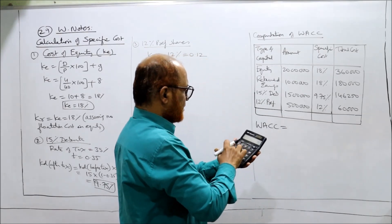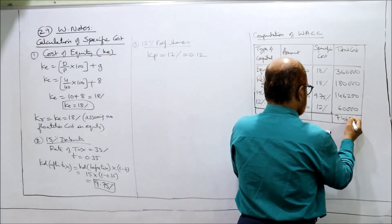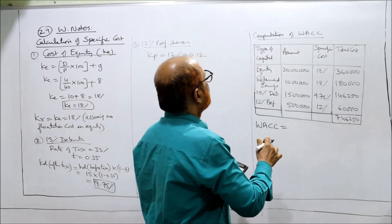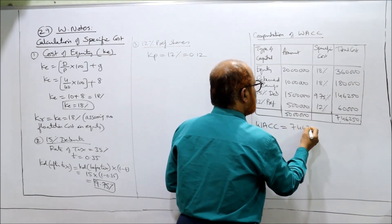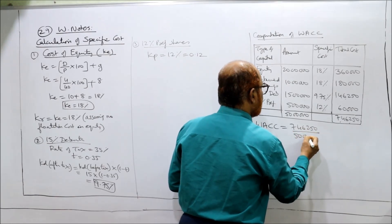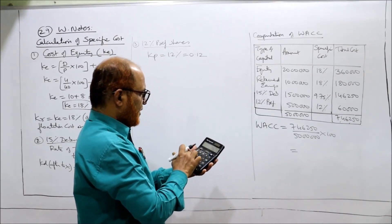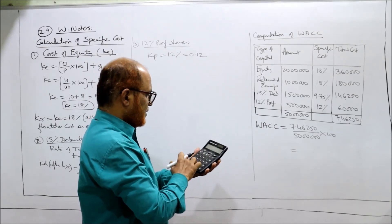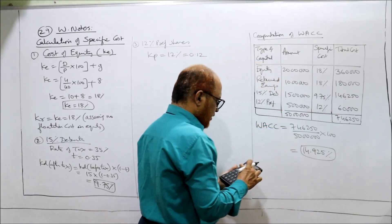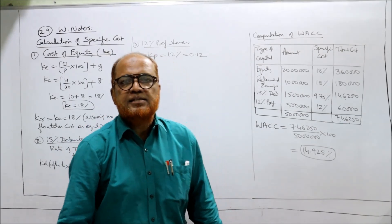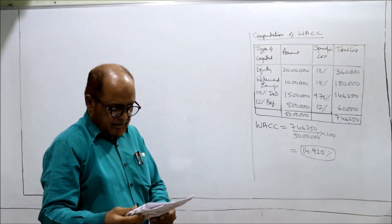Calculations: 20 lakhs into 18% = 3,60,000. 10 lakh into 18% = 1,80,000. 15 lakh into 9.75% = 1,46,250. 5 lakh into 12% = 60,000. Total is 7,46,250. Total capital is 50 lakhs. WACC is 7,46,250 divided by 50 lakhs into 100 = 14.925%. This is the WACC.